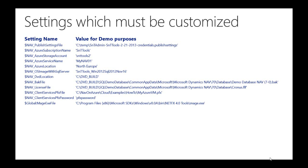The next setting is NAV Azure service name. This is the name you want to use for your VM instance on Azure. Please choose carefully — whatever name you choose must be unique and will form part of the URL you use to access the NAV client. For example, http://mynavo1.cloudapp.net.